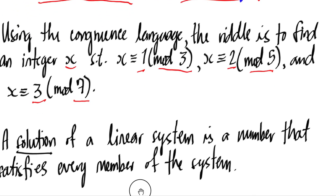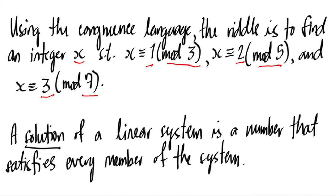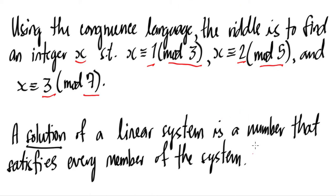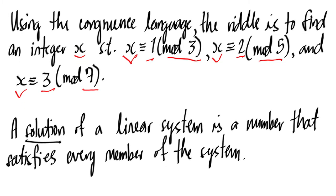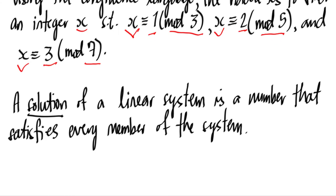Take note that a solution of a linear system is a number that satisfies every member of that system. For example, in this particular example, we have x, and we don't know what x is here, what x is here, and what x is here. But one can observe that we can get the value of x first by trial and error.